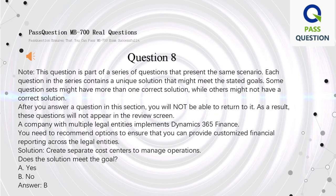Question 8 — Note: This question is part of a series that presents the same scenario. Each question contains a unique solution that might meet the stated goals. Some question sets might have more than one correct solution while others might not have a correct solution. After you answer a question in this section, you will not be able to return to it. A company with multiple legal entities implements Dynamics 365 Finance. You need to recommend options to ensure customized financial reporting across the legal entities. Solution: Create separate cost centers to manage operations. Does the solution meet the goal? A: Yes. B: No. Answer: B.